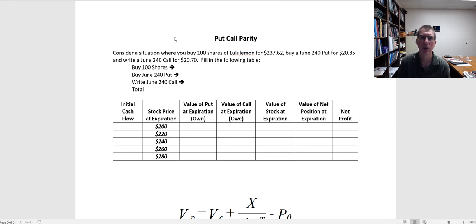So in this situation, we're going to buy 100 shares of Lululemon. For this example, we're going to assume it's trading for $237.62. At the same time, we're going to buy a June 240 put contract for $20.85, and we're going to write a June 240 call for $20.70.